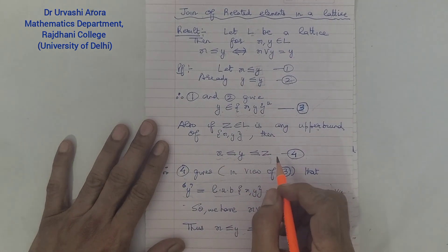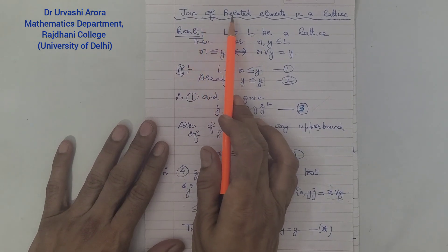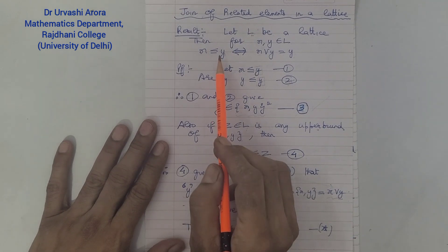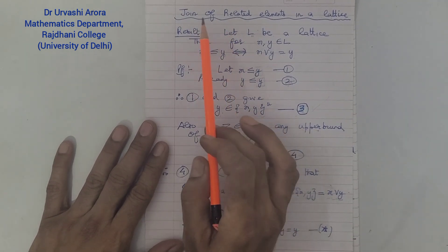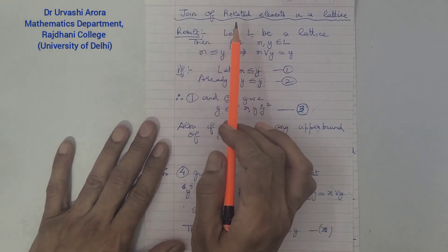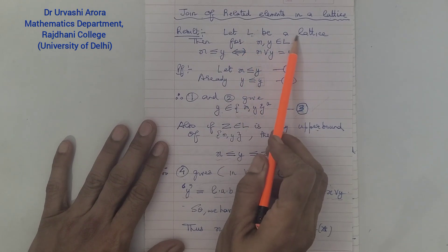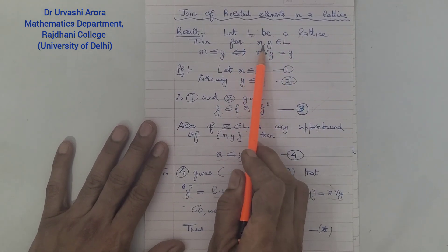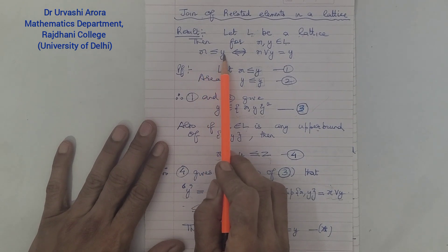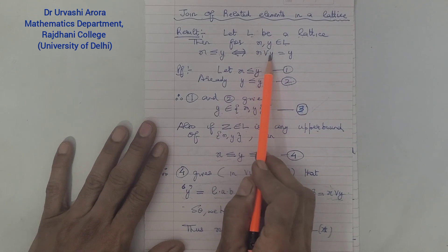Hello students. In this video lecture I'm going to discuss a result regarding the join of related elements in a lattice. The result is regarding related elements which you pick up in a lattice and what is going to be their join. The result goes like this: if L is a lattice and x and y are any two elements belonging to L, then if x is less than equal to y, this implies that the join of x and y is y.